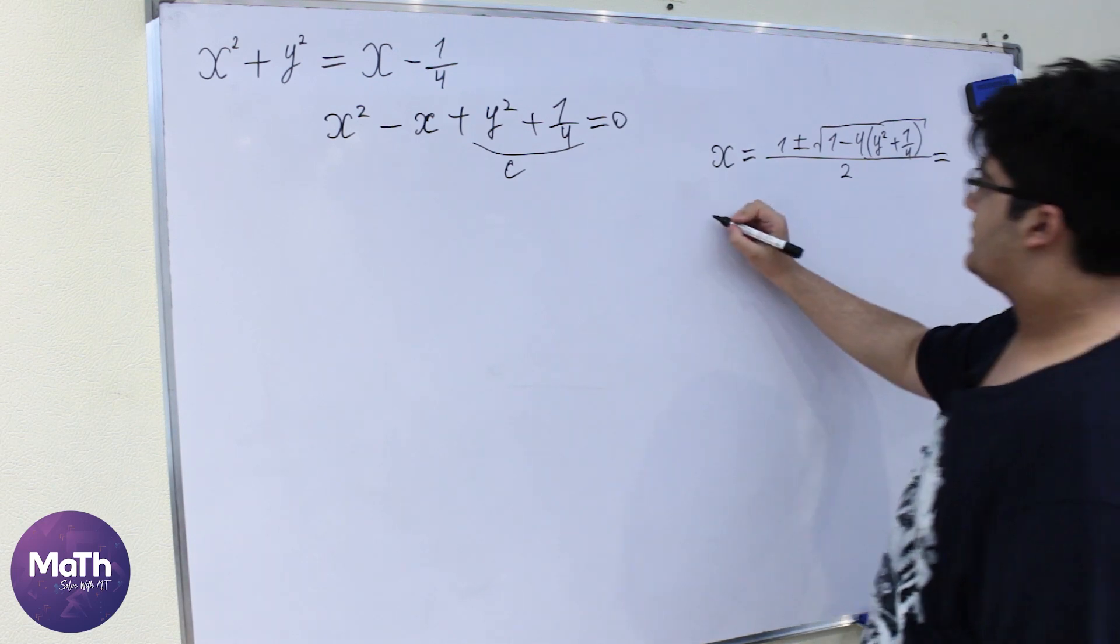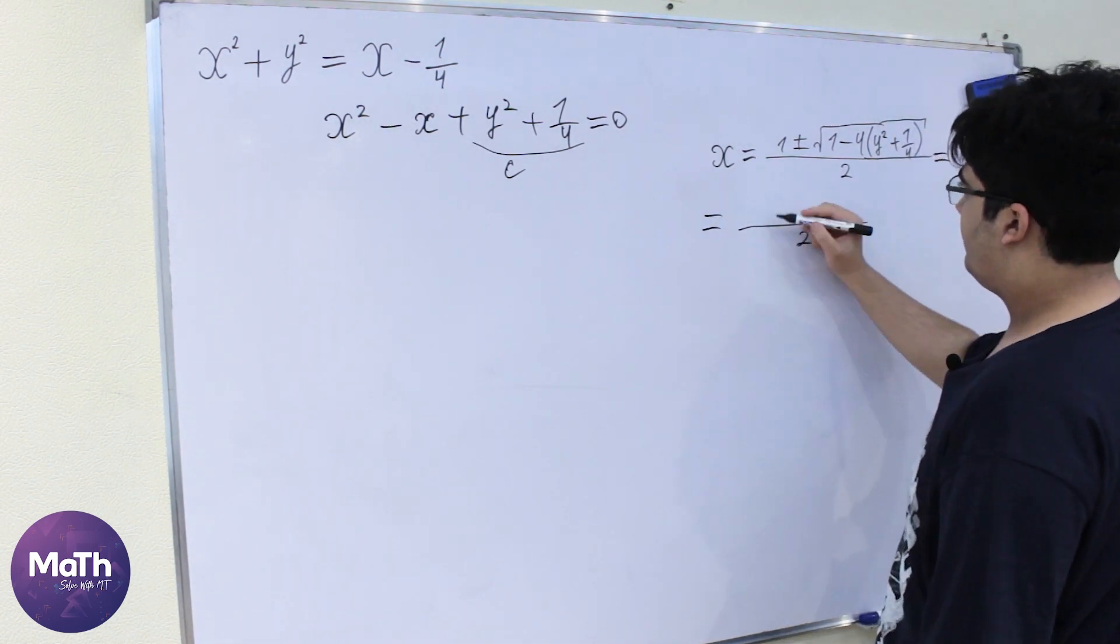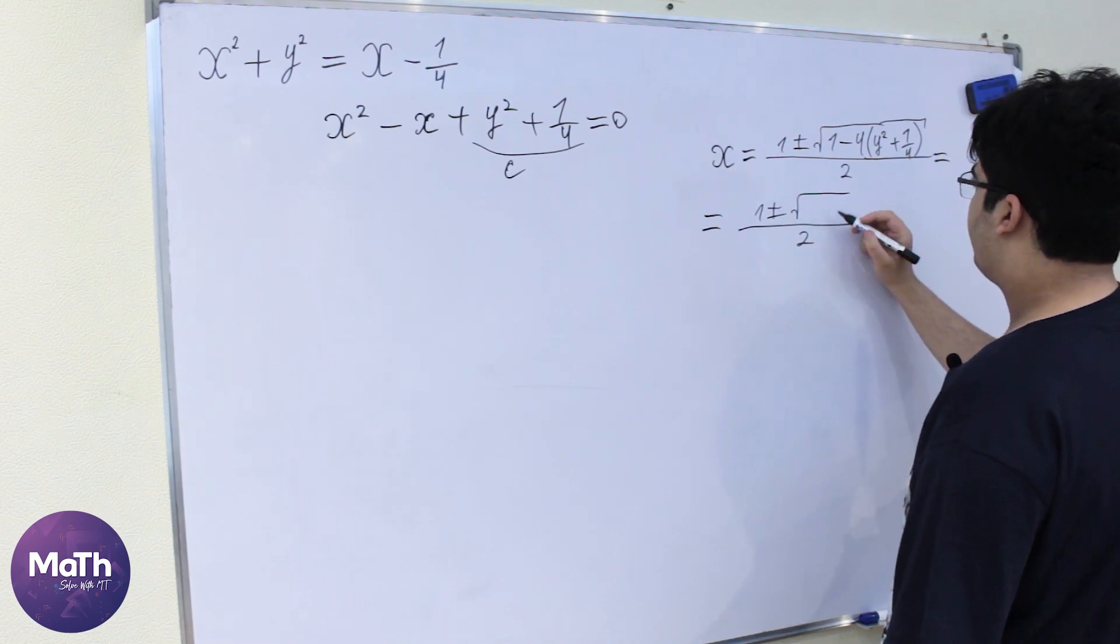So this is equal to 1 plus minus square root of minus 4 y squared.